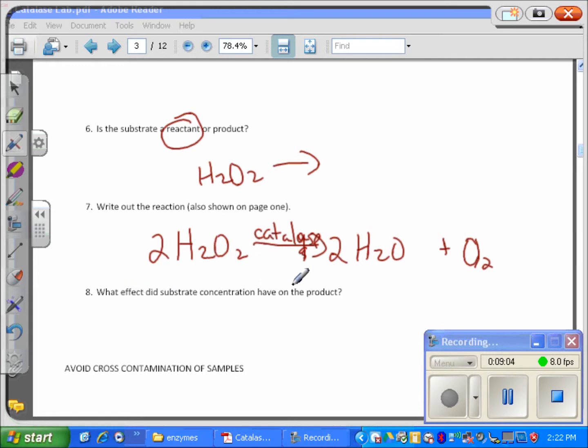What effect did the substrate concentration have on the product? Well, it increased in the beginning and then it kind of leveled off. Explain this part of the graph saying that as substrate concentration increased, so did the rate of reaction, but then it leveled off because the active sites were filled and so the enzyme could only go so fast. And that's your lab.